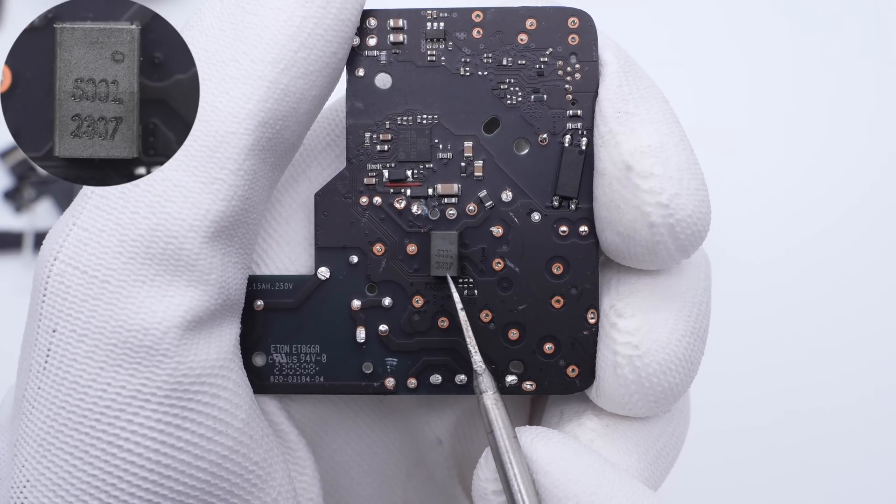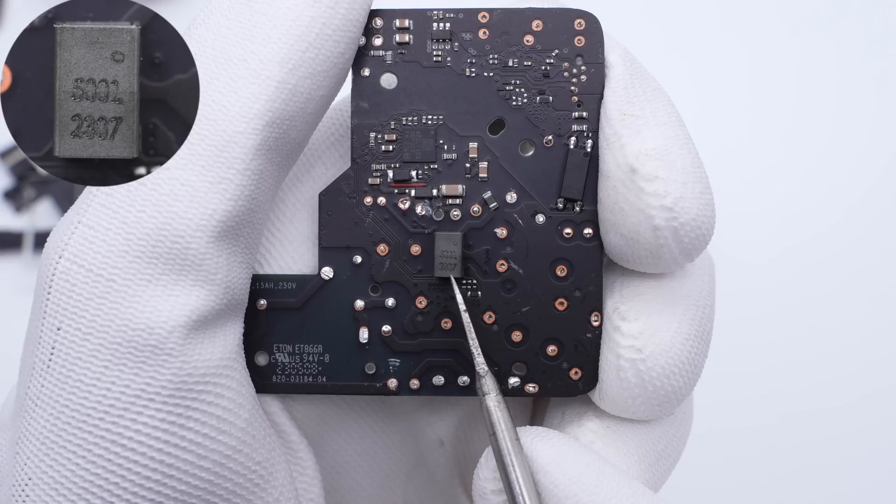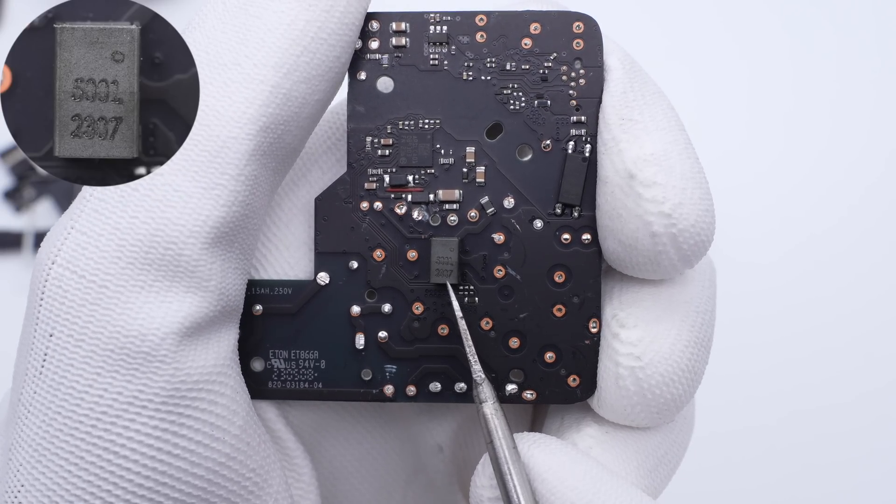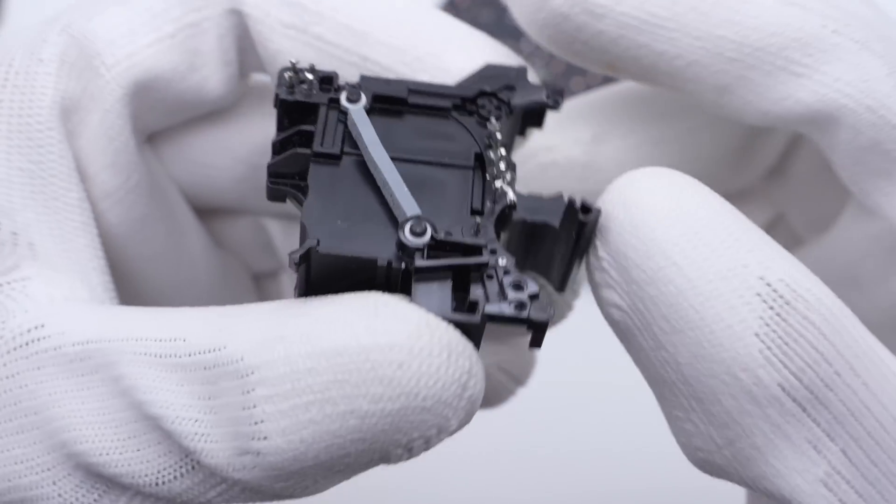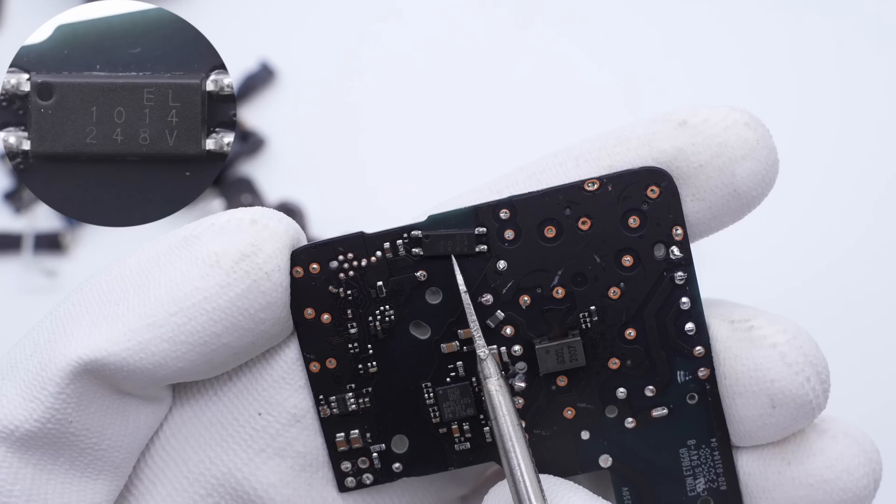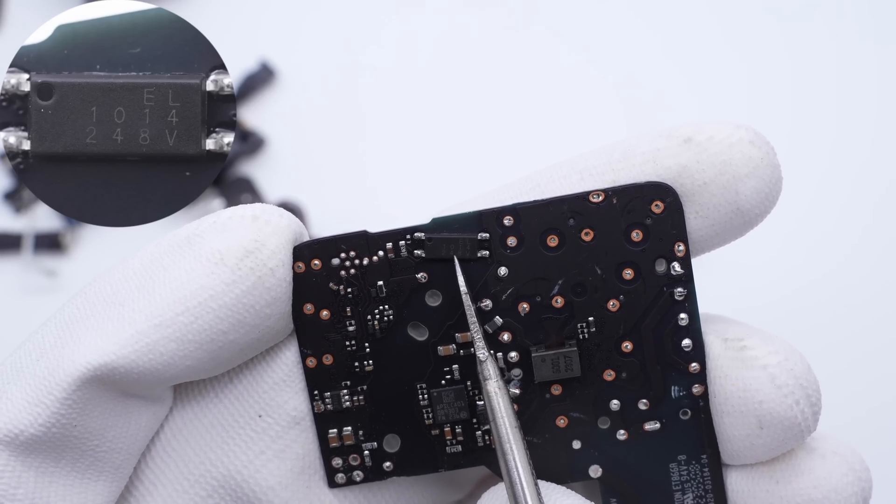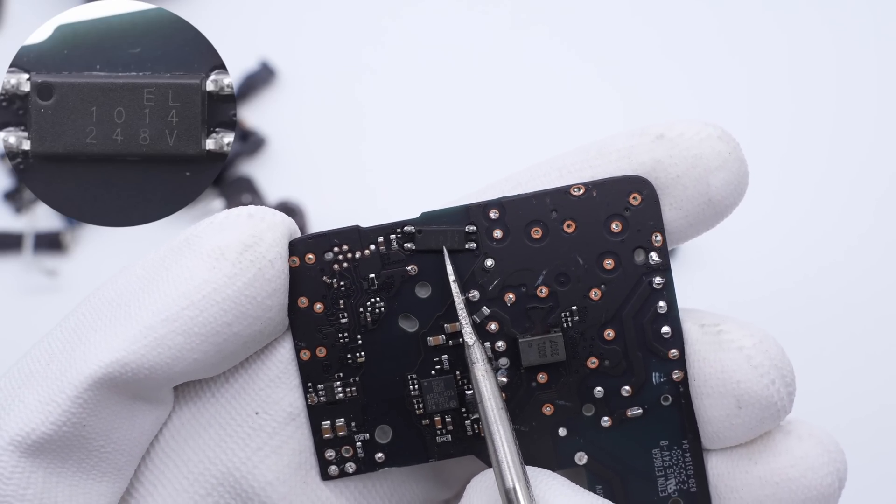The SMD current transformer is on the front, used to detect the current of the primary side for overcurrent protection. The magnetic core of the planar transformer is insulated by a plastic case. The EL1014 optocoupler is used to regulate the output voltage.